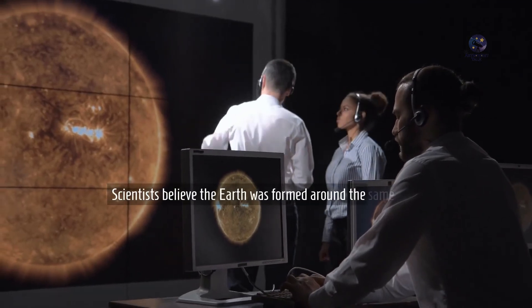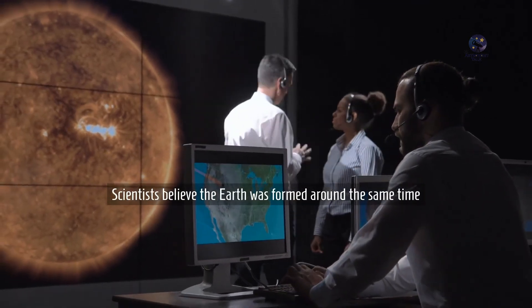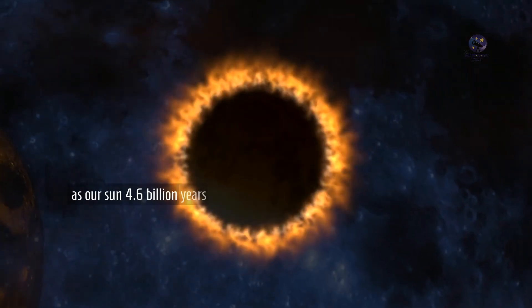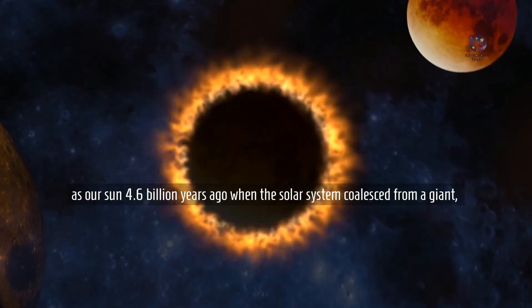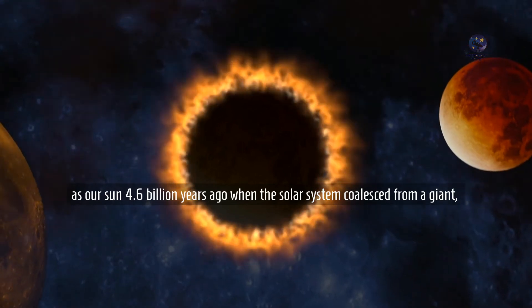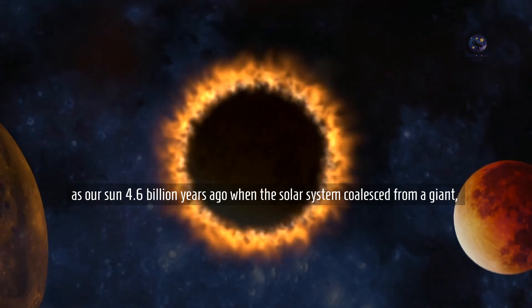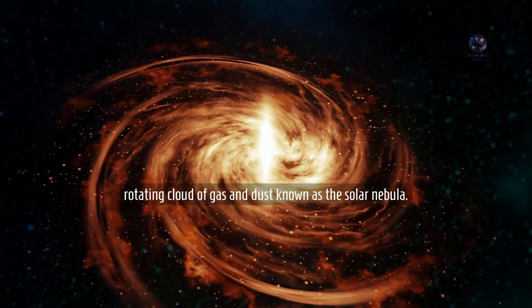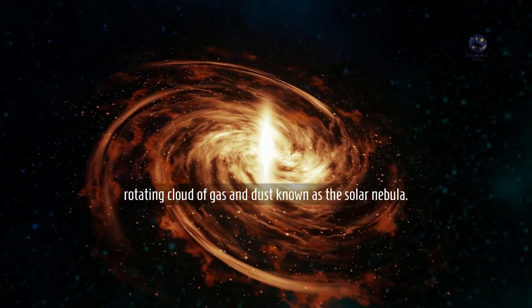Scientists believe the Earth was formed around the same time as our sun, 4.6 billion years ago, when the solar system coalesced from a giant rotating cloud of gas and dust known as the solar nebula.